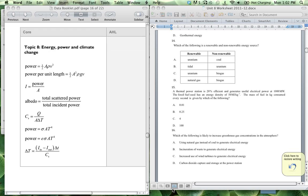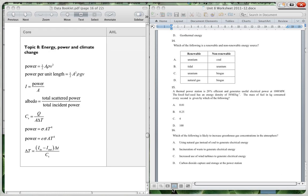Question 16. Which of the following is likely to increase greenhouse gas concentrations in the atmosphere? Using natural gas instead of coal to generate electrical energy. Well, that will actually reduce it because natural gas power stations are more efficient than coal. So that won't increase.